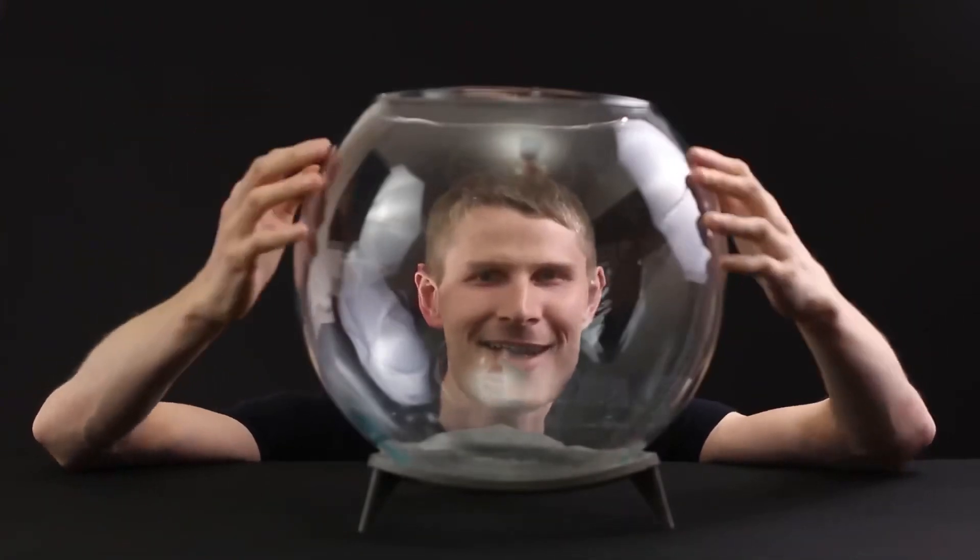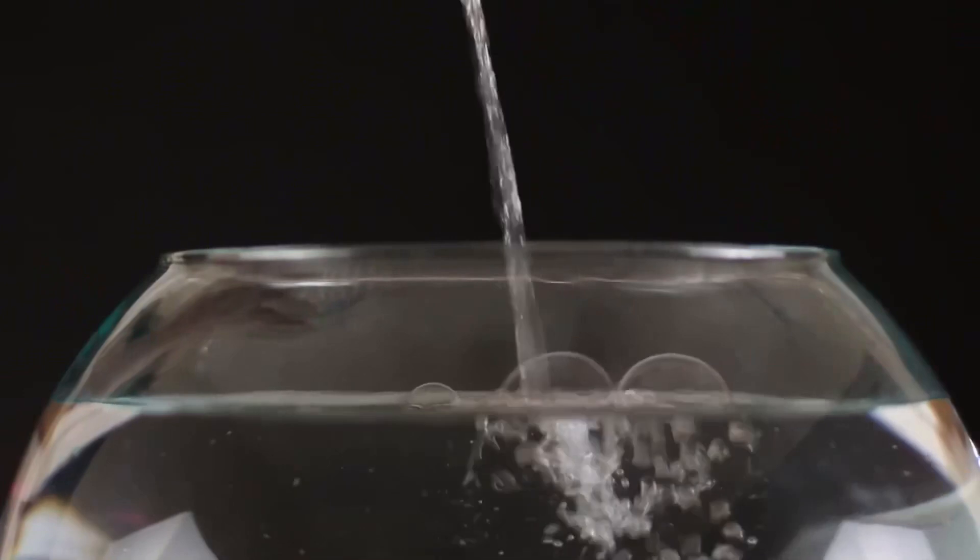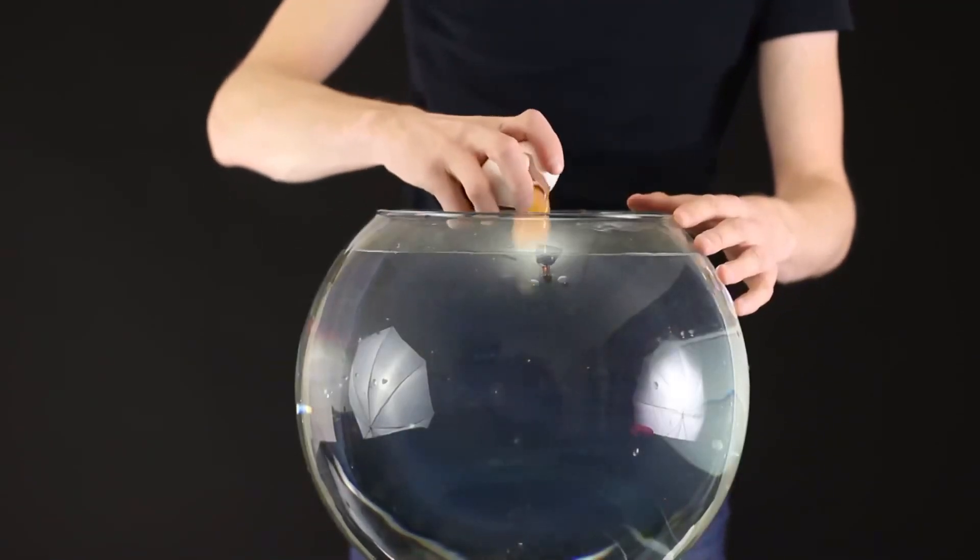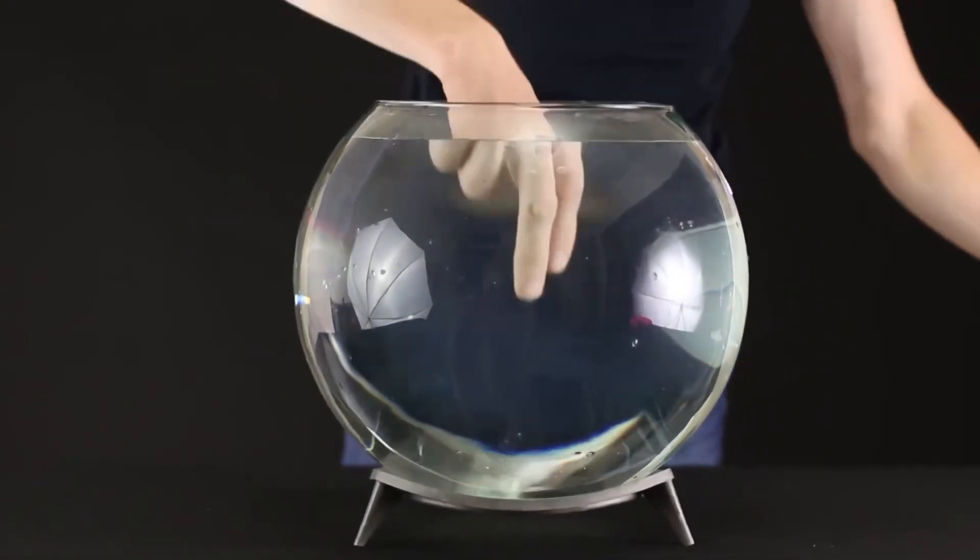For the next experiment, I got this aquarium. How's the view? Fill the aquarium with water almost to the edge. And now we break the raw egg inside. It immediately goes to the bottom, but it's not as simple as that.